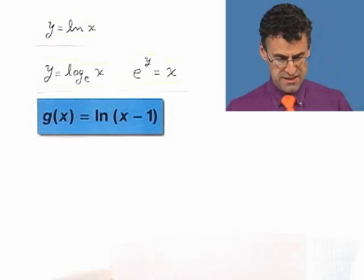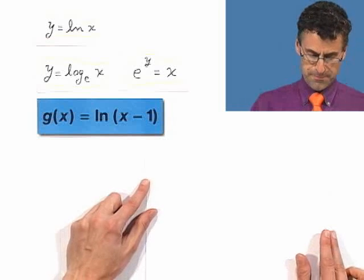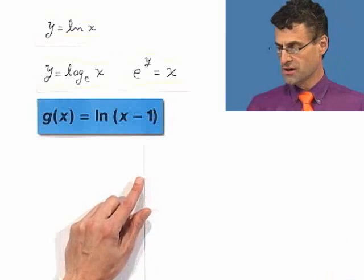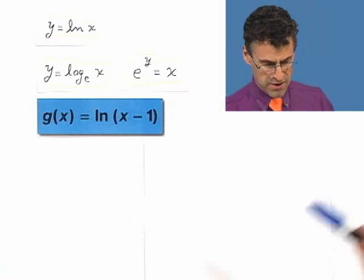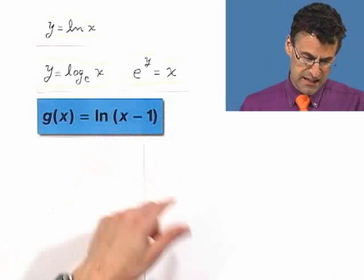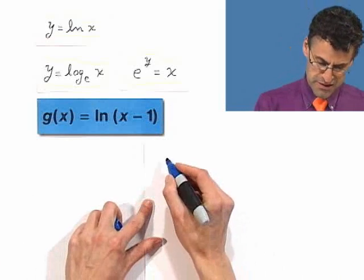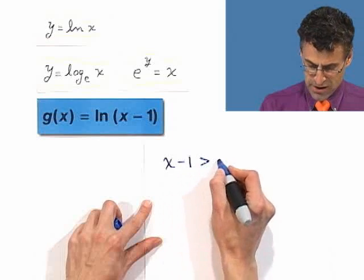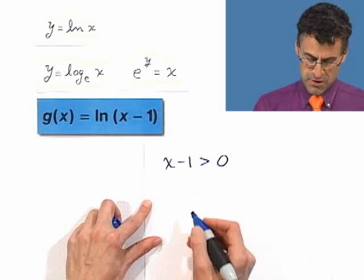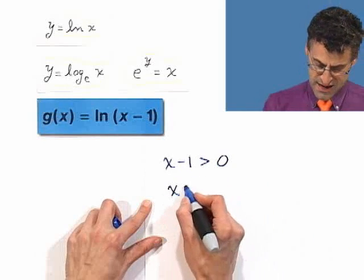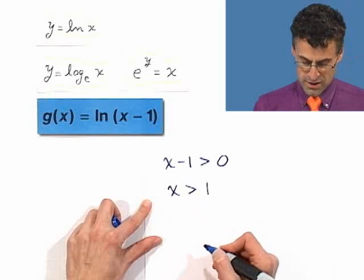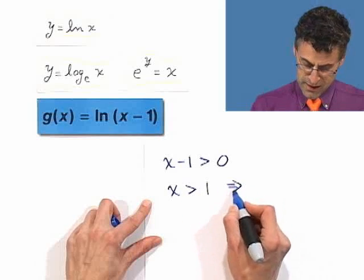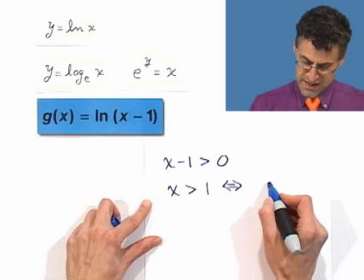So g of x equals the natural log of the quantity x minus 1. What's the domain of this function? Well, the only rule in town is, the only thing I can take natural logs of are things that are bigger than zero. So the domain would be x minus 1 has to be greater than zero. And if you solve this inequality by adding 1 to both sides, I see x is greater than 1.